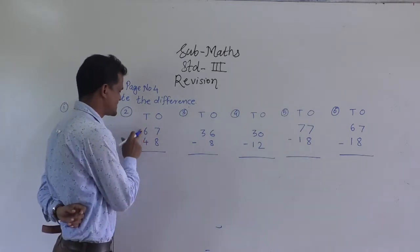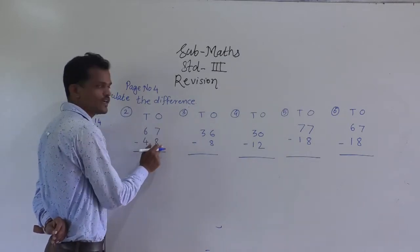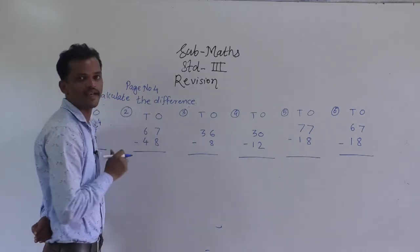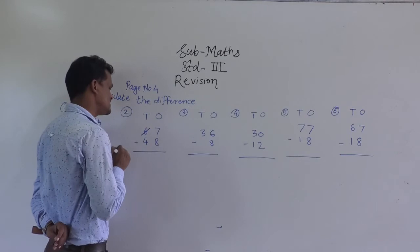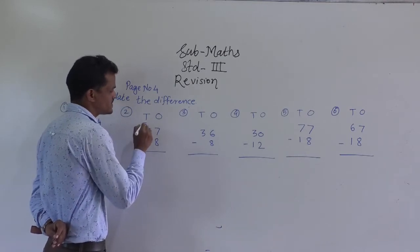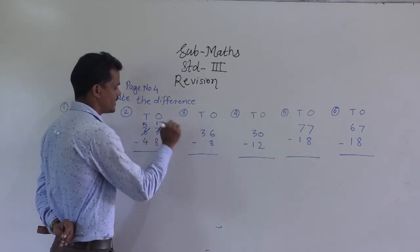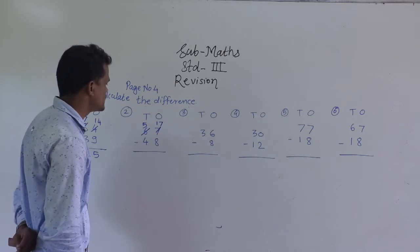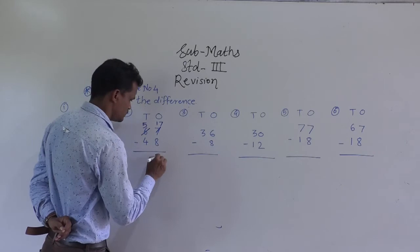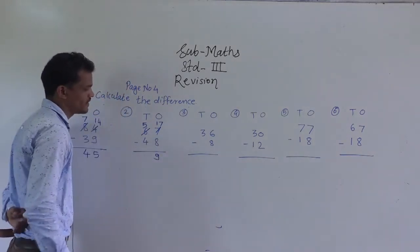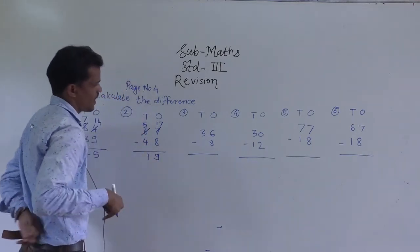Next example: 67 minus 48. Here, 7 minus 8 is not possible because 7 is smaller than 8 — we can't subtract a bigger number from a smaller number. So, regroup this 6 tens into 5 tens and 10 ones. Add those 10 ones into this 7 ones to get 17 ones. Now 17 minus 8 is 9, then 5 minus 4 is 1. So 19 is the answer.